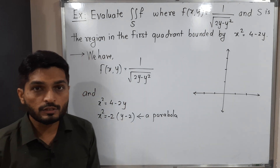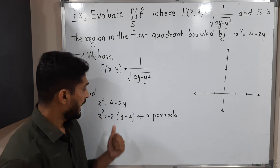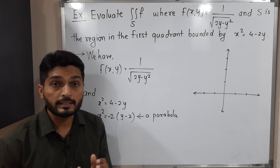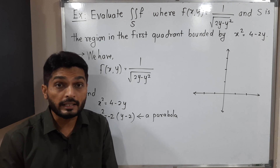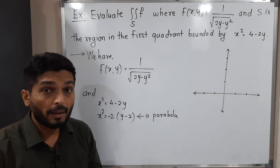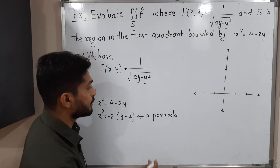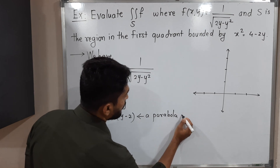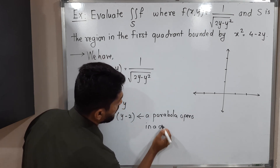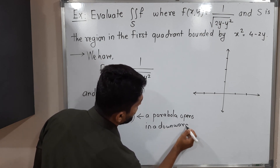Since the power of y is 1, and it has a minus sign, the axis of symmetry is particularly the negative y-axis. That means the parabola opens in a downward direction.